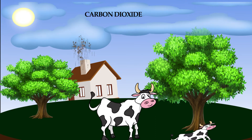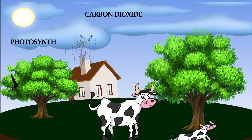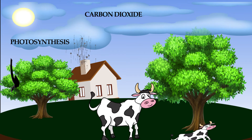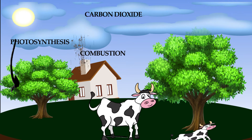Plants take water and carbon dioxide from the sun and use it to make food. Plants and animals waste decompose to release carbon dioxide. Carbon dioxide traps heat in our atmosphere.